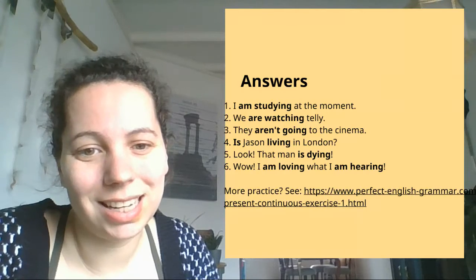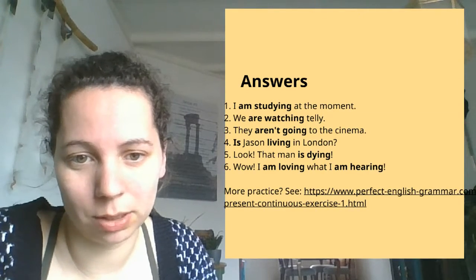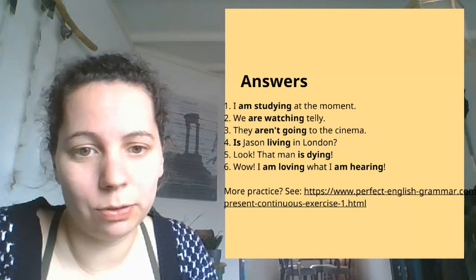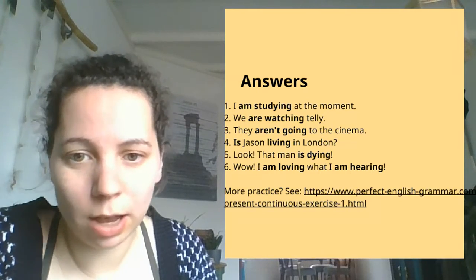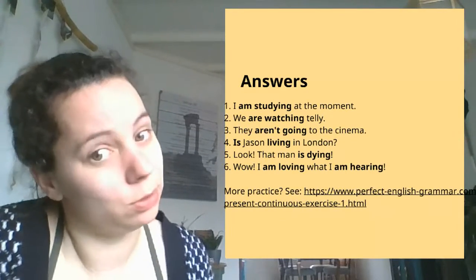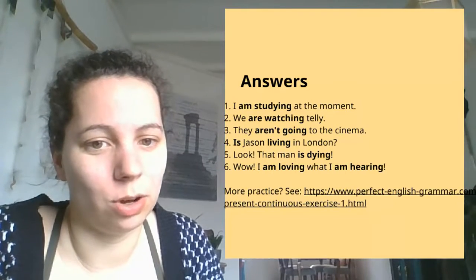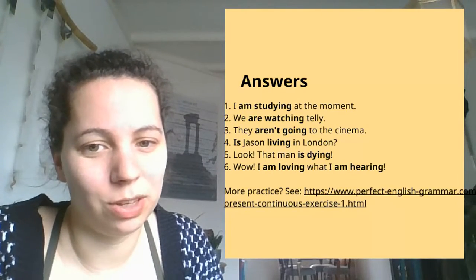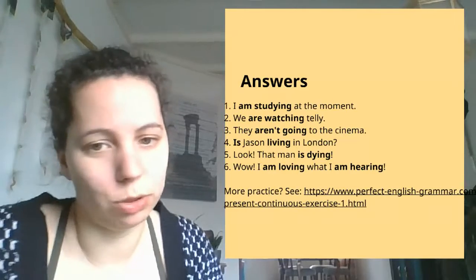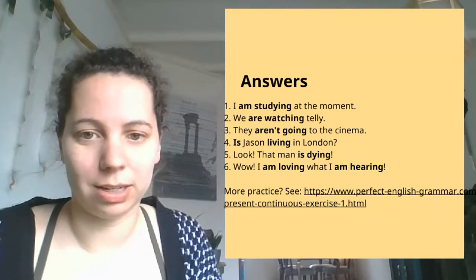In six, we have 'am' twice because it's I as the subject both times. The first verb is 'love' — love has the silent E, it was the example verb actually — so it's 'loving' with V-ing. And the last one, 'hearing', is perfectly normal, nothing special, just -ing at the end.